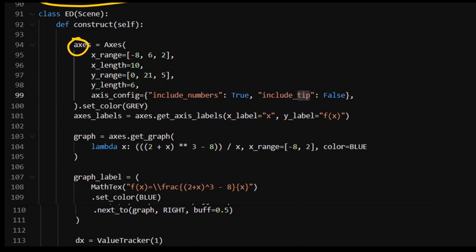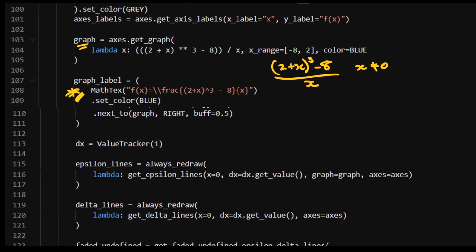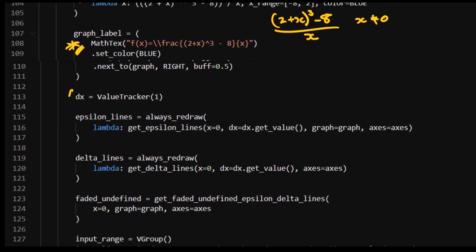So essentially, this is the scene. We've got an axis. We've just called some parameters here. I want there to be numbers. I don't want there to be tips. We've got a graph where this is just 2 plus x cubed minus 8 over x, and this is going to be undefined at x equals 0, so you can't put that point in there. I've called some latex to give me the equation of the line on the screen. And then I've got a value tracker for dx. And so I want this thing to approach 0. That's really what I want it to do.